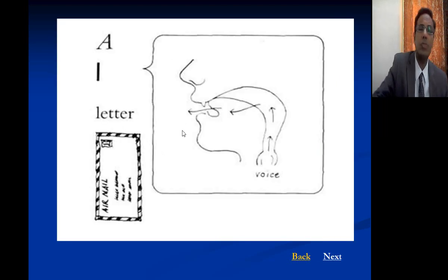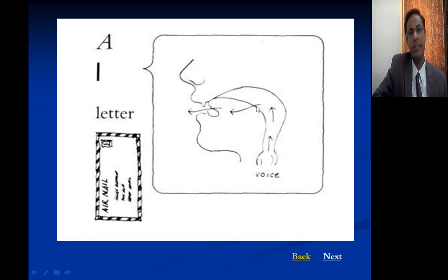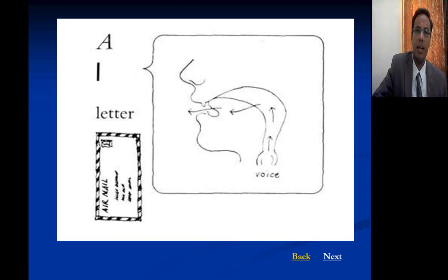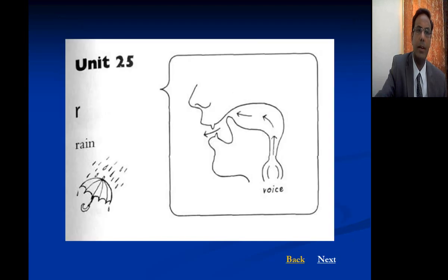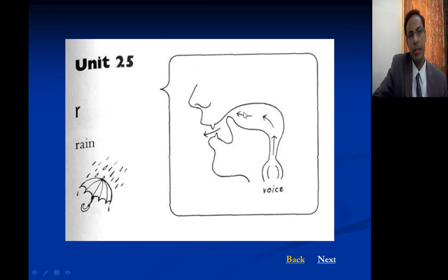For the lateral L sound, the tip of the tongue touches the alveolar ridge and air escapes through both sides of the tongue. The next example is the R sound — as in 'rain' — it is an approximant. The tip of the tongue is raised toward the hard palate and it is voiced.